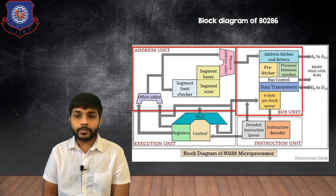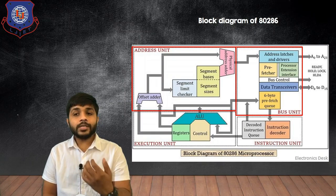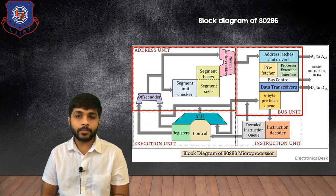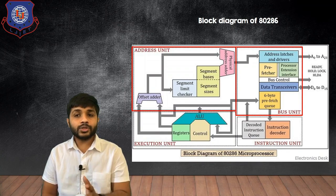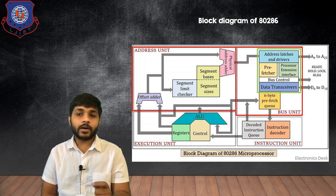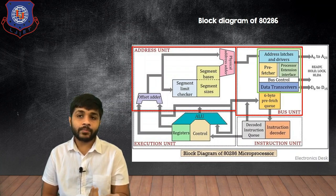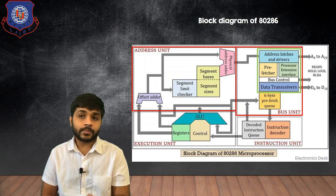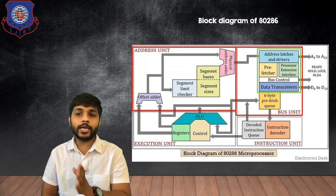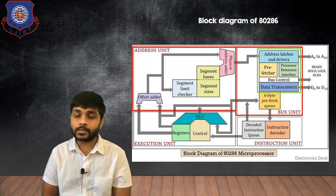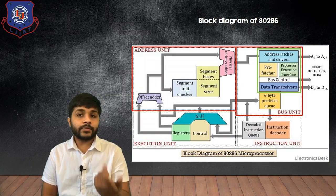The second part is the bus unit. This part is used to generate different buses. In the 80286 there are different buses such as address bus, data bus, and the control bus. In the bus unit there are different sections. The first part is the address latches and the driver — using this block the address bus is originated. You can see that A0 to A23, so a total 24-bit address is possible in the 80286, meaning the size of the address bus is 24 bits.